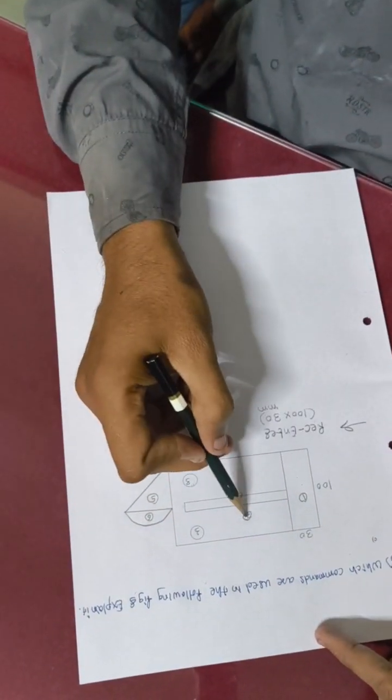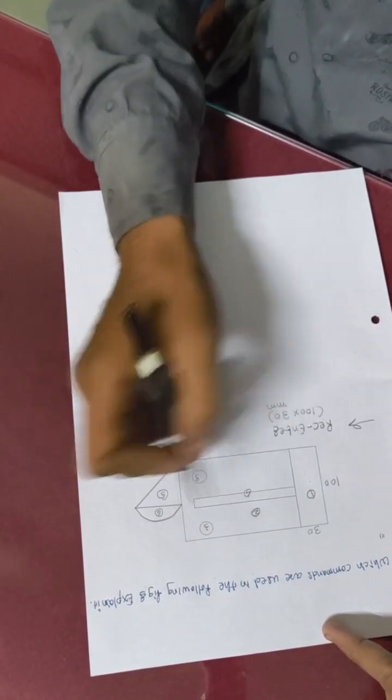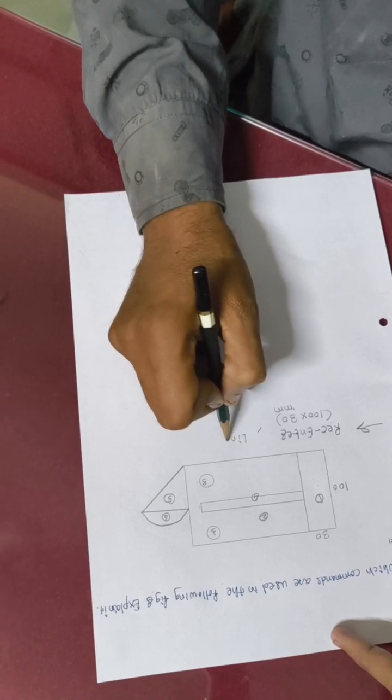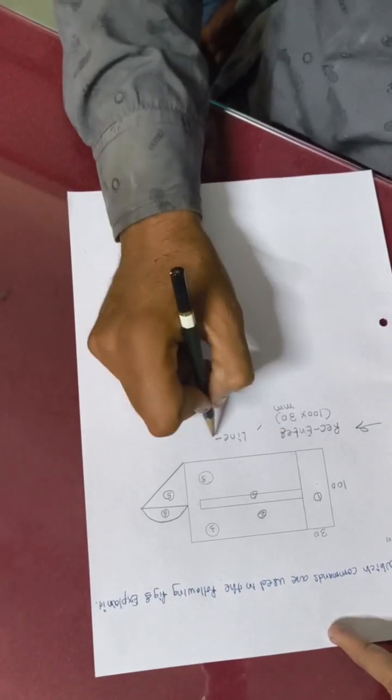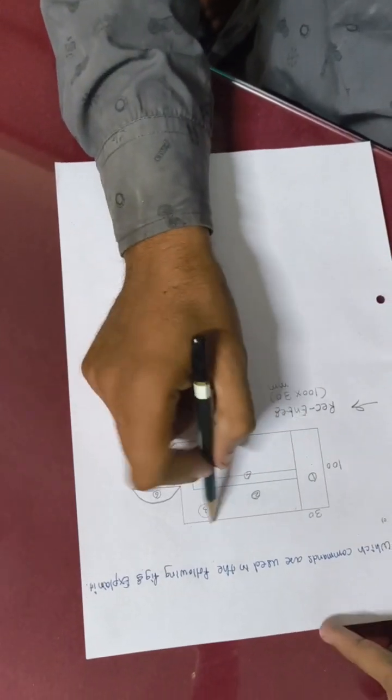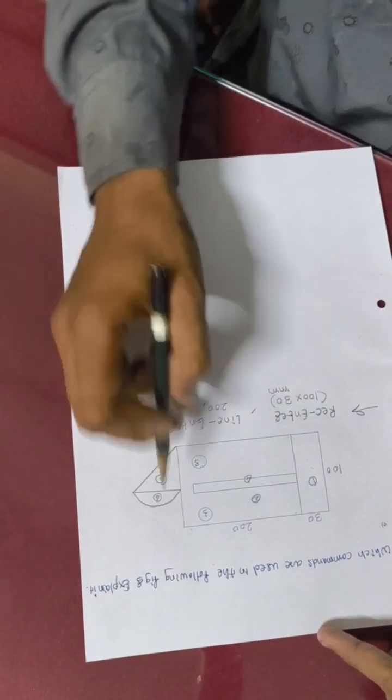Next is the second section. The entire section is a rectangular section, or we can use line command. Line command: L enter. This line is maybe 200mm. How many times? 200.